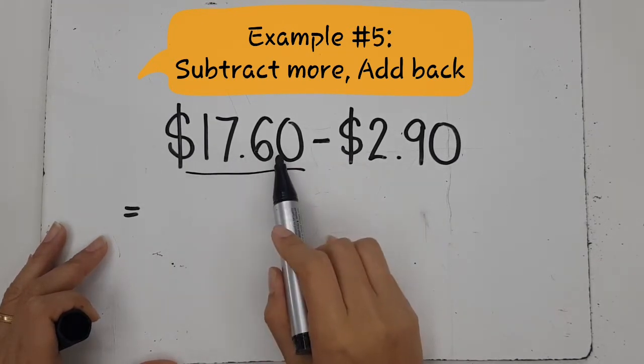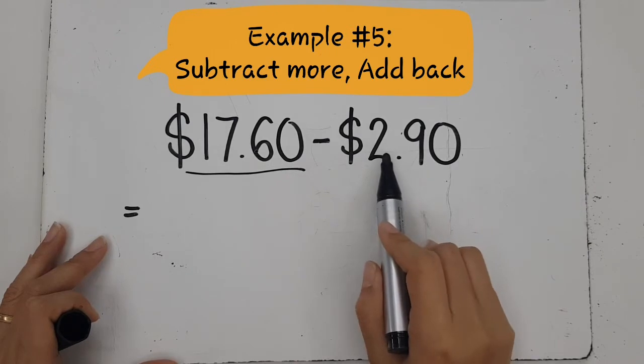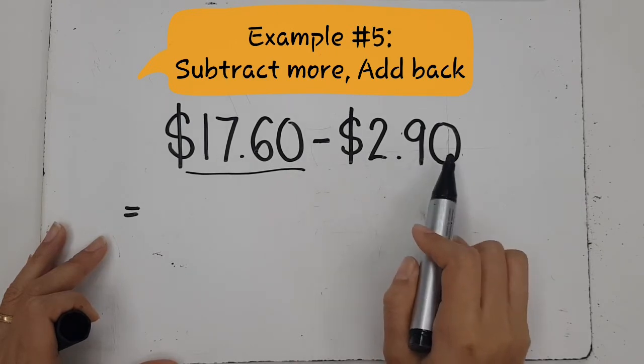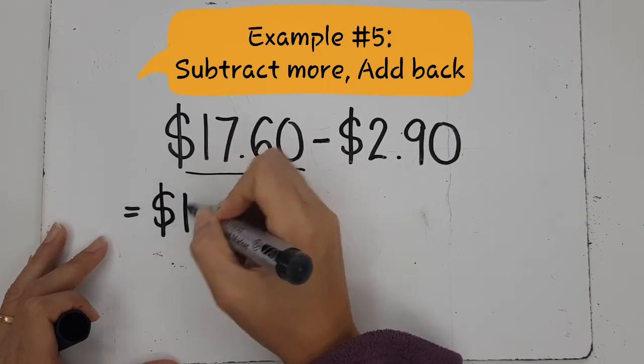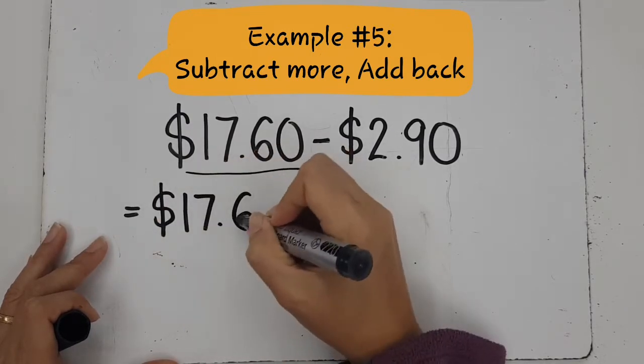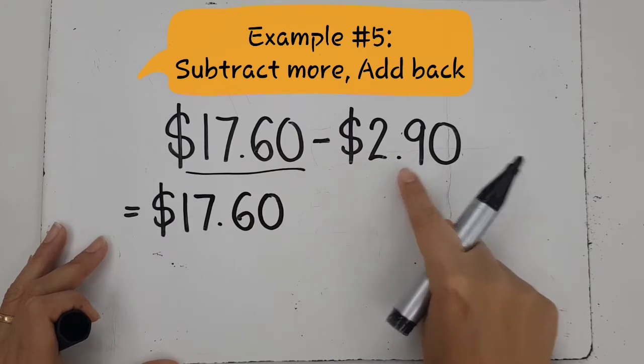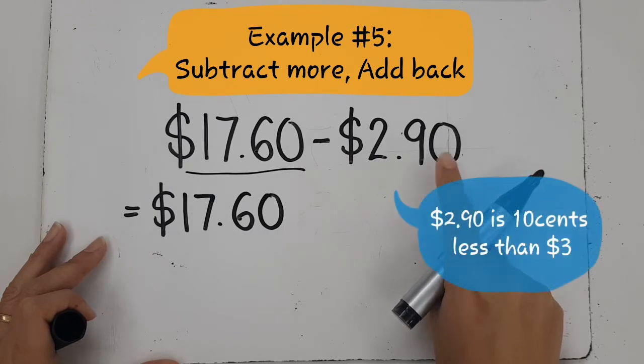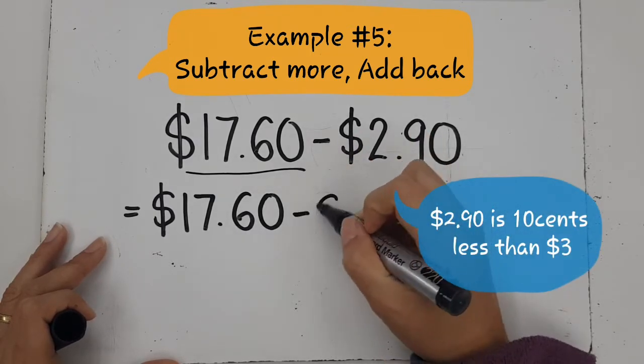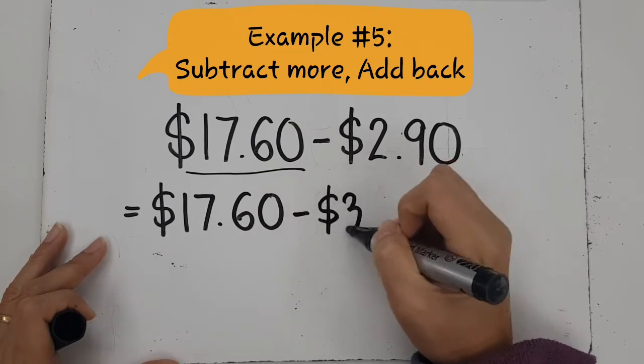If we have $17.60 and we want to take away $2.90, what I can do is instead of taking away $2.90, how much is a bit more than $2.90? If I have another 10 cents, it is actually $3, right? So instead of taking away $2, I am going to take away $3. I am going to take away more than I am supposed to take away.